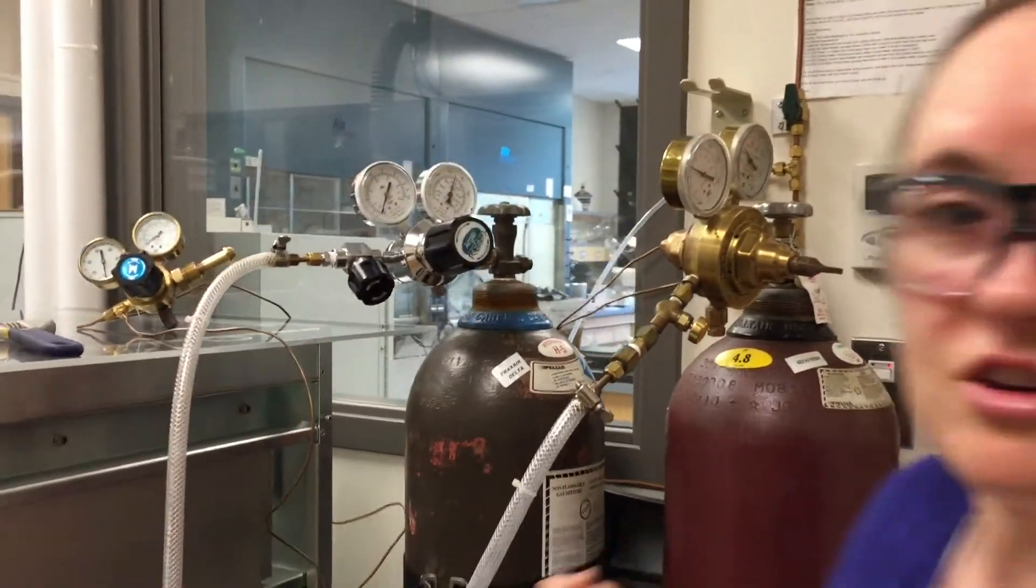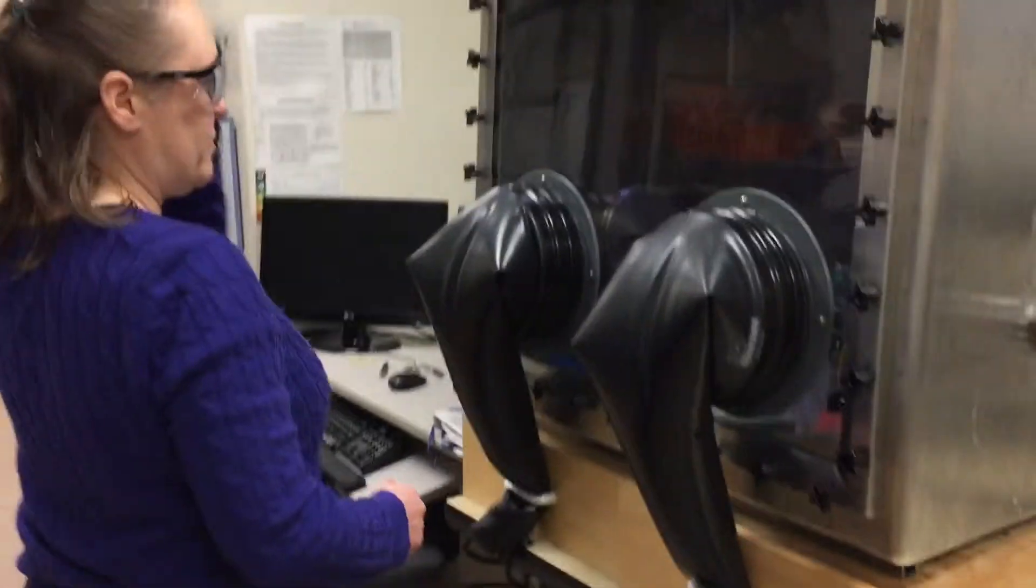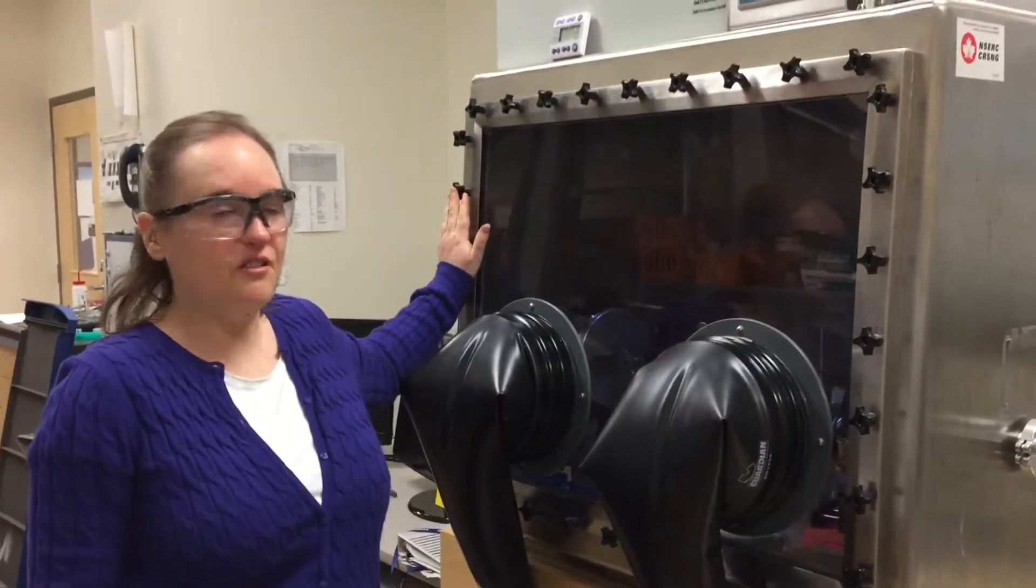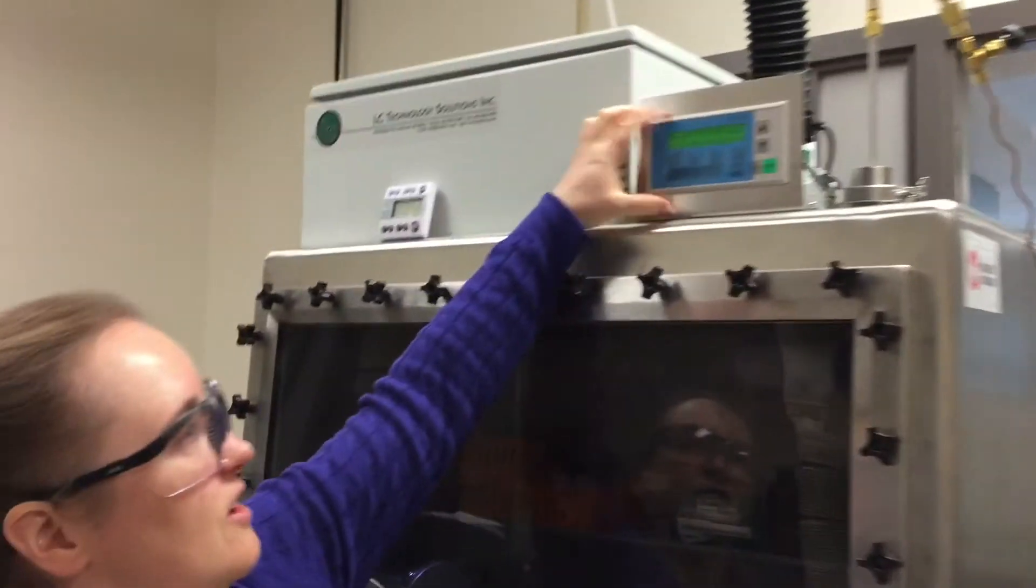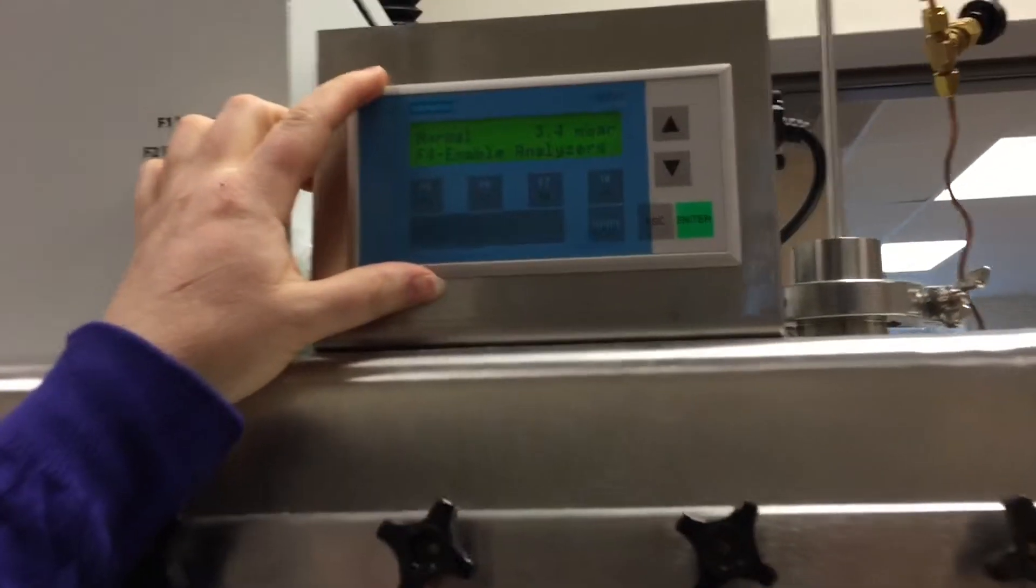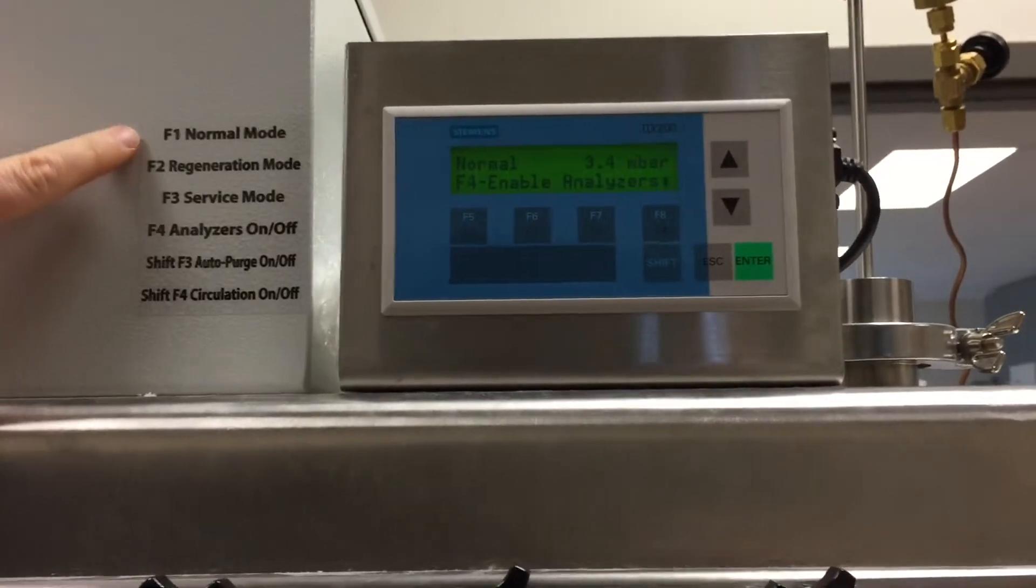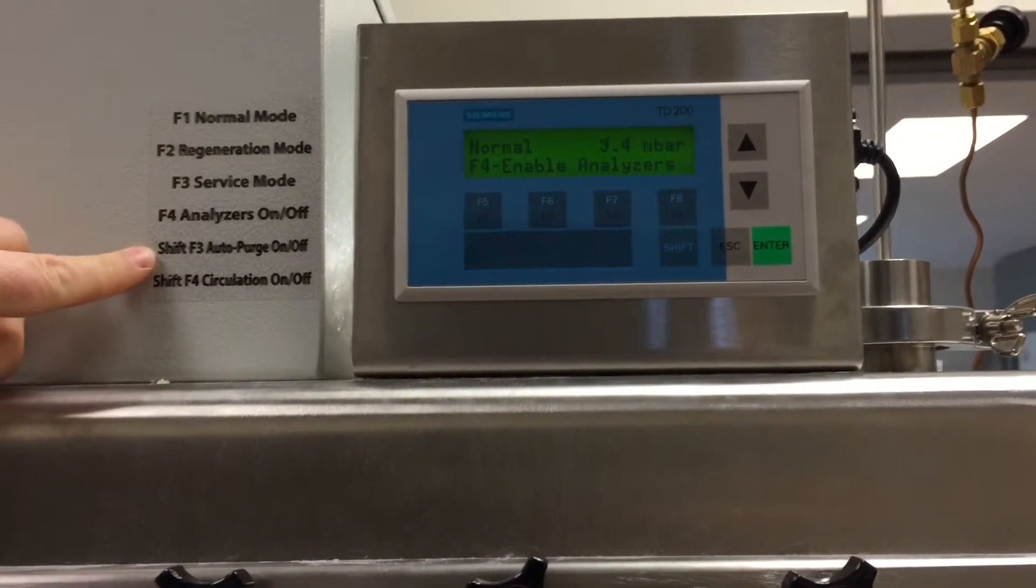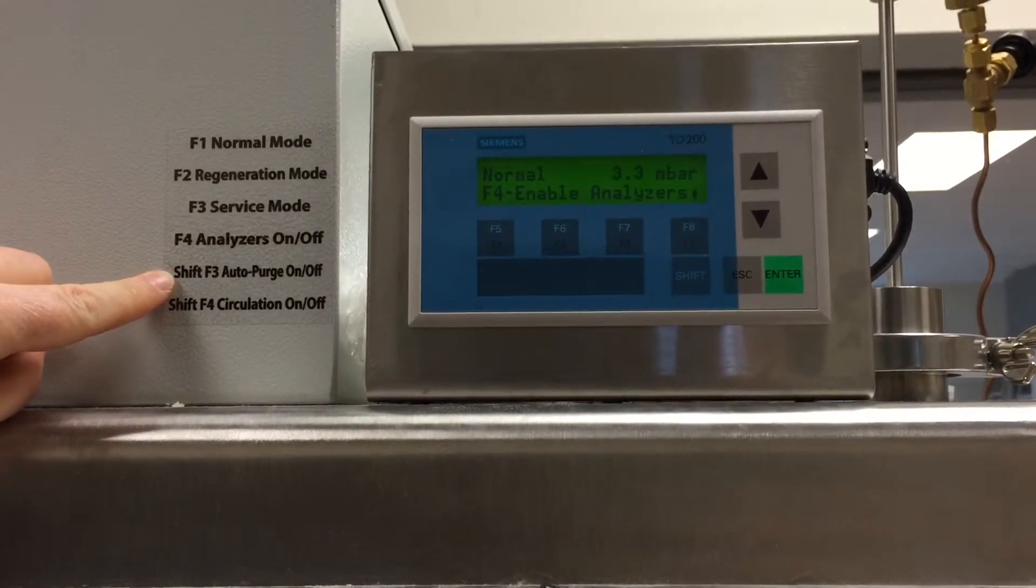So now we can go over to the glove box and we can turn on the correct settings that we need. This is our small glove box. There's an operating panel up here on the top. So there's a little sticker code that tells you what you have to push in order to get everything ready.